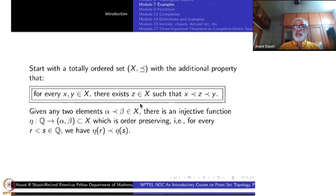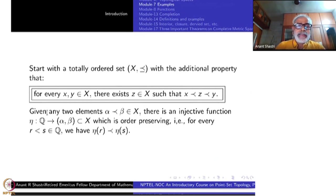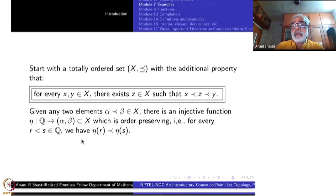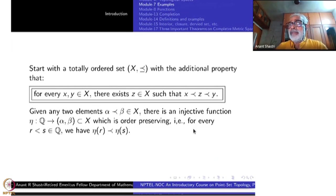Assume this property. Then given any two elements α and β in X, there will be an injective function η from ℚ (the set of all rational numbers) to the interval (α, β) inside X, such that η is order-preserving: r < s in ℚ implies η(r) ≺ η(s). So the whole of ℚ sits inside (α, β) through this injective order-preserving map.